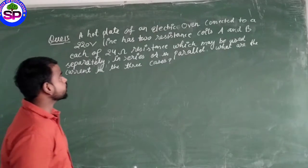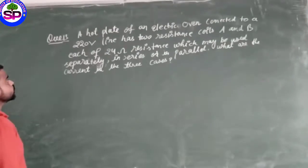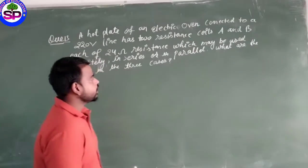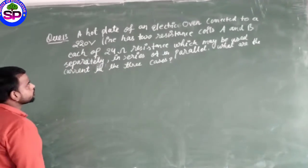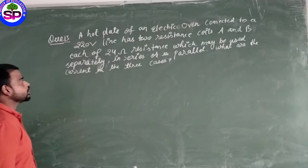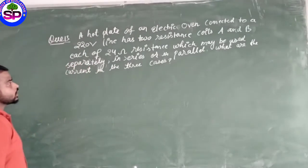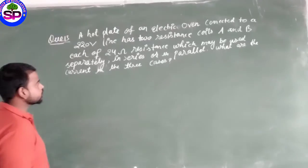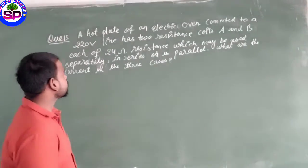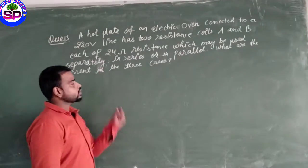A hot plate of an electric oven connected to a 220 volt line has two resistance coils A and B, each of 24 ohm resistance which may be used separately, in series, or in parallel. What are the currents in the three cases? The potential difference is 220 volt and has two resistances of 24 ohm.